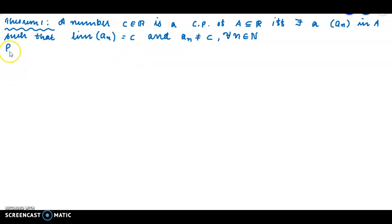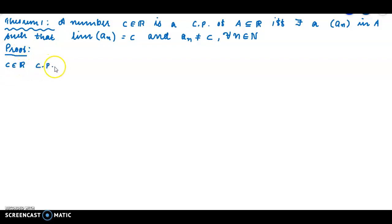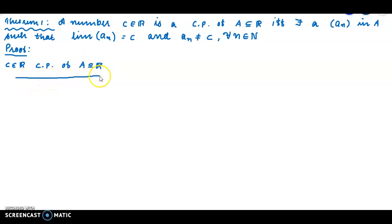Now we come to the proof of the theorem. First, we assume that c, element of ℝ, is a cluster point of A, which is a subset of ℝ. So c is a cluster point of A.